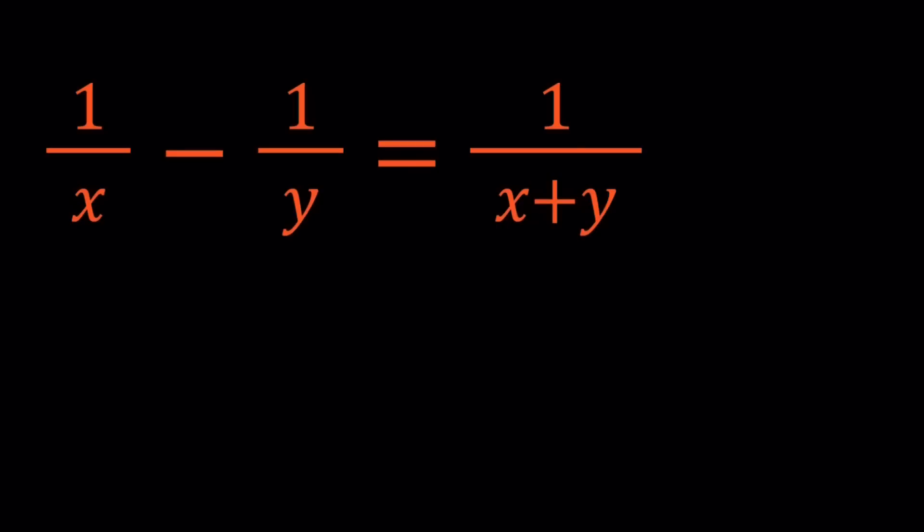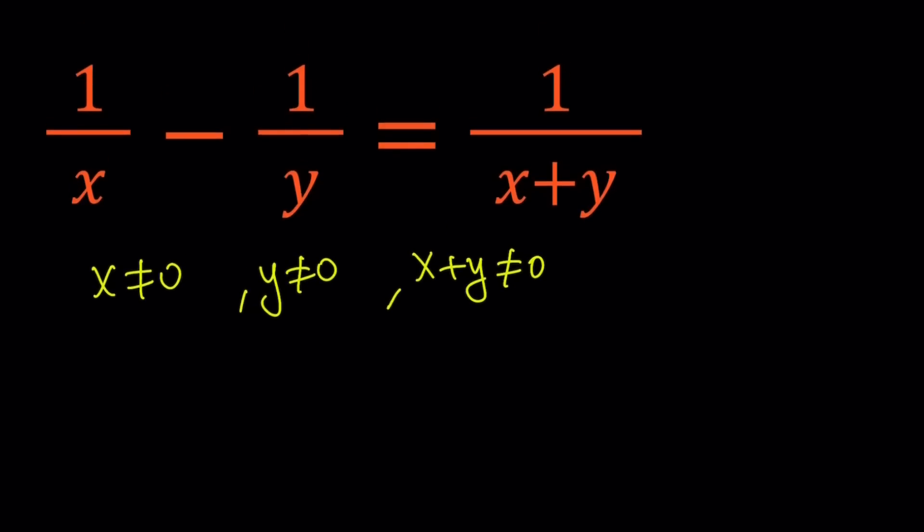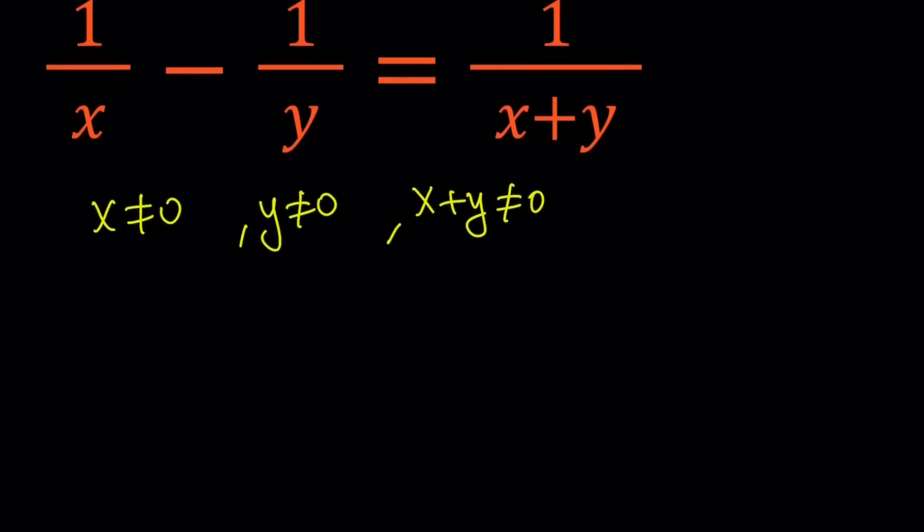Let's get started. First of all notice that x cannot be 0, y cannot be 0, and x plus y cannot be 0. Now under those conditions let's go ahead and make a common denominator. That gives us y minus x divided by xy equals 1 over x plus y.